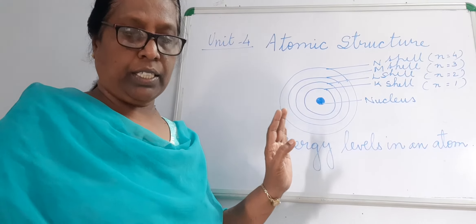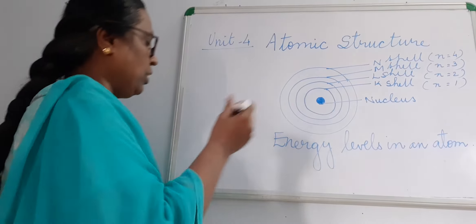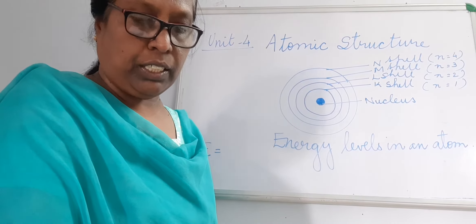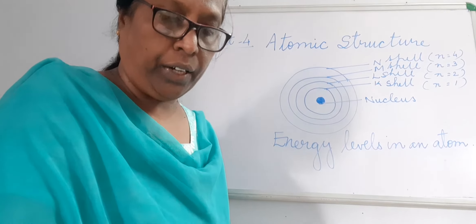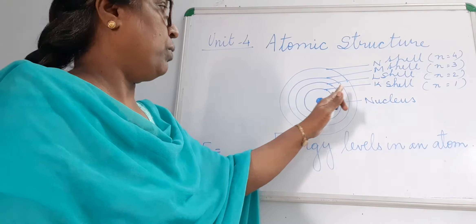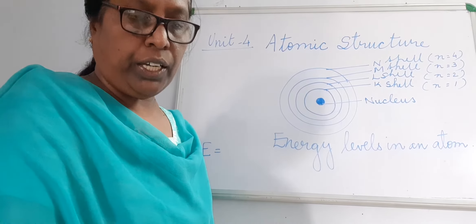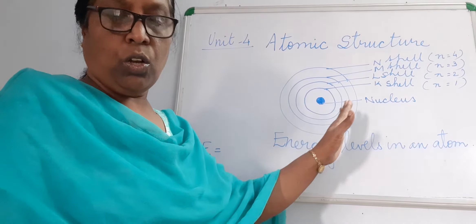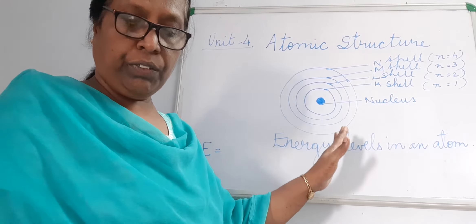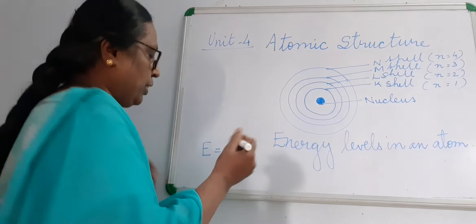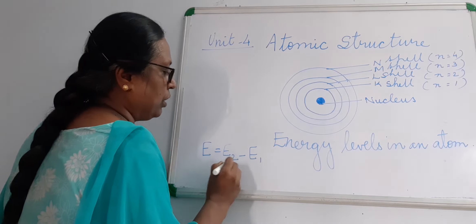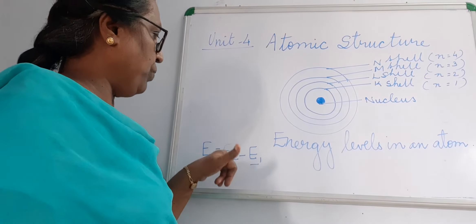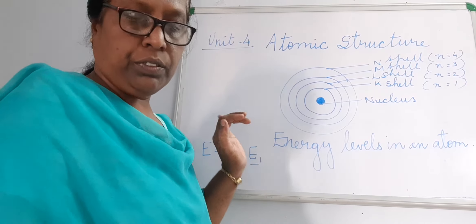The energy of a photon is represented as E, which is equal to E2 minus E1 — the energy difference from moving one shell to another. E2 is the energy of the final orbit and E1 is the energy of the initial orbit. Each shell has its own energy. E2 means the energy of shell 2 and E1 means the energy of shell 1.